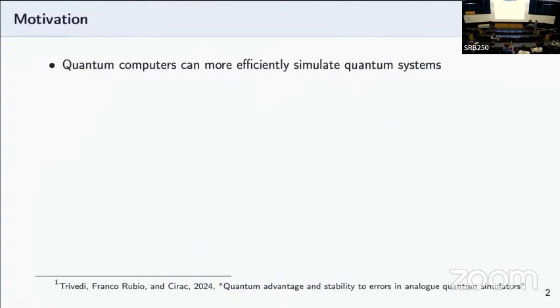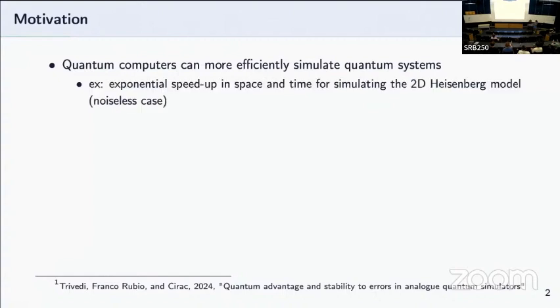To start off, as we all know, quantum computers can more efficiently simulate quantum systems compared to best-known classical algorithms. A simple example is that we can see exponential speed up in space and time when we want to simulate a 2D Heisenberg model under the assumption that each qubit is noiseless.